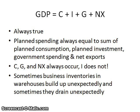The way that Keynes would have said it is that planned spending, or what he called aggregate expenditures, was always equal to the sum of planned consumption (C), planned investment (I), government spending, and net exports. Keynes assumed that consumption, government spending, and net exports always occurred, but the strength of I was relatively uncontrollable.